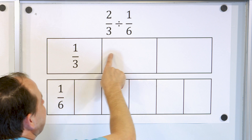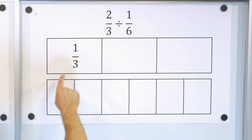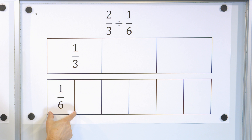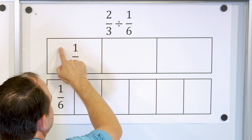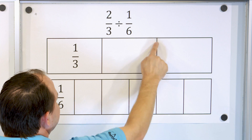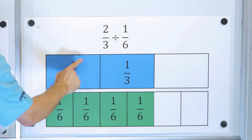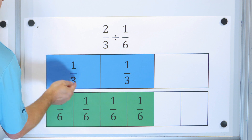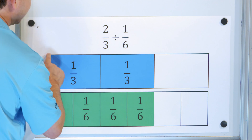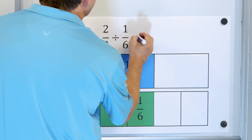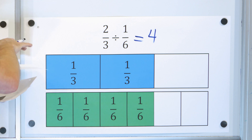1 third means taking a candy bar into three equal pieces and only having one. 1 sixth means cutting it into six pieces and only having one. We're taking 2 thirds and dividing by 1 sixth. If this is 1 third, then 2 thirds is twice that. How many times can 1 sixth fit into 2 thirds? It can fit 1 time, 2 times, 3 times, 4 times. So dividing 2 thirds by 1 sixth goes exactly four times. That's the final answer.